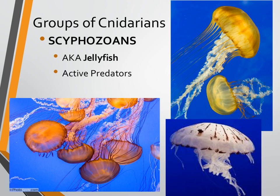Another class of Cnidarians is the Scyphozoans. The Scyphozoans are the jellyfish, and these are active predators. Because they're in that medusa form, they're going to be out and about seeking prey and using those sting cells to stun the prey and pull them into the mouth for feeding.